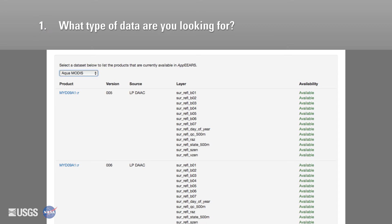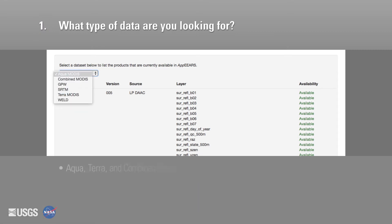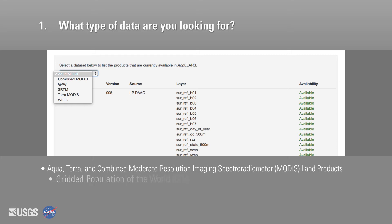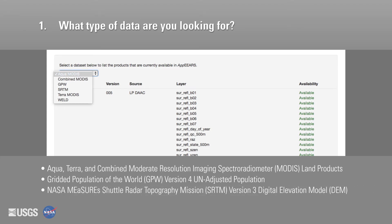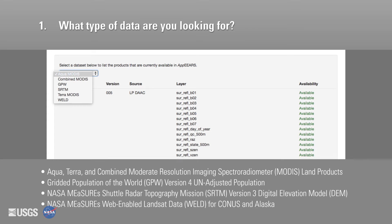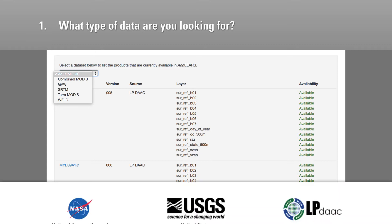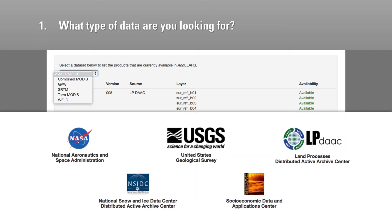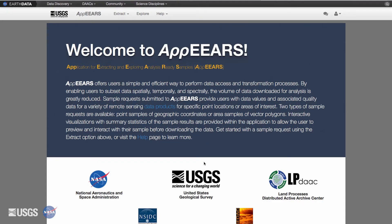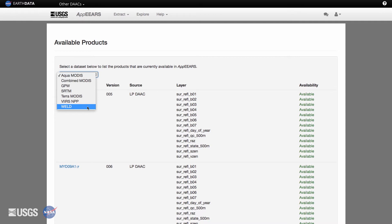What type of data are you looking for? Available datasets include Aqua, Terra, and combined MODIS Land Products. All of our data products include quality data that are included in your request output. Terra and Aqua MODIS snow cover data and the GPW data are provided in collaboration with the National Snow and Ice Data Center and the Socioeconomic Data and Application Center. New products are continuously being added to APIRS as well.